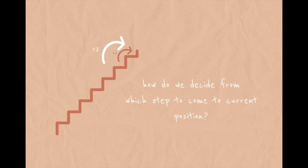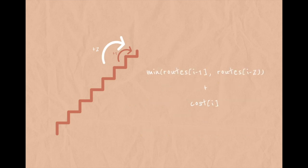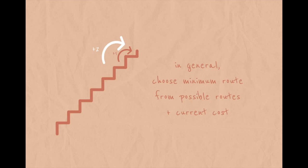How do we decide from which step to come to the current position? That's where we use our pattern. We need to choose the minimum path so far — choosing between doing one step or doing two steps. We choose the minimum and then add our cost to climb further. When we reach the top, we will have a total minimum cost. In general, the approach is: choose the minimum route from possible routes and add the current cost.